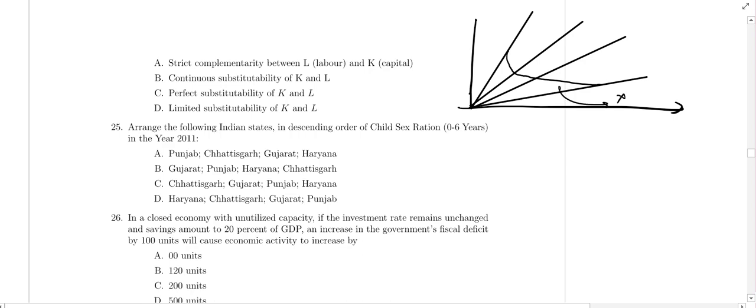This is the product X, this is L, this is K, and these are P1, P2, P3, P4. We can combine this to get the isoquant. According to the diagram, we can see limited substitutability of K and L, so answer D is correct.